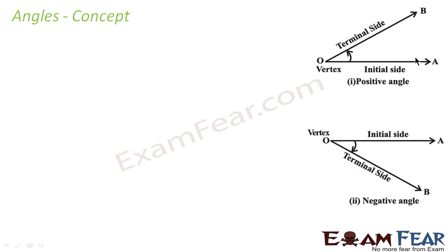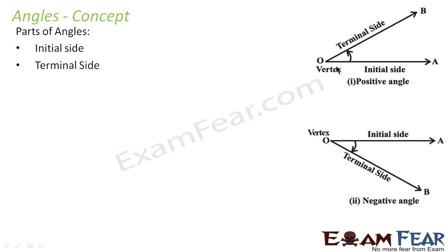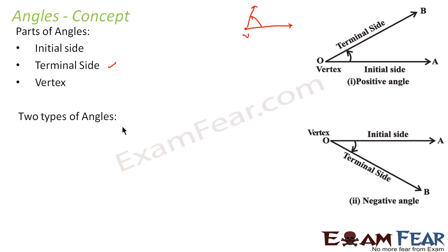There is an initial side OA and a terminal side — the terminal side is the side obtained after rotation. In one case you rotate anti-clockwise, in another case you rotate clockwise. The parts of an angle are: the initial side (where you start), the vertex (the fixed point about which you rotate), and the terminal side (the final side after rotation).